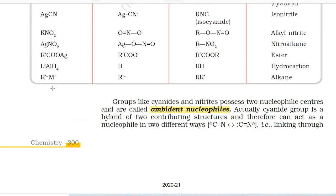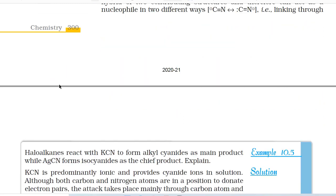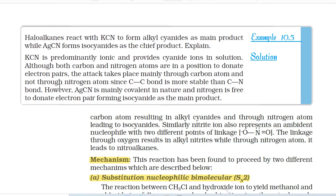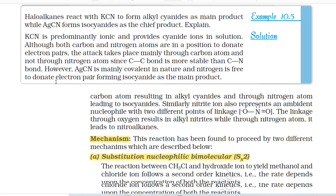Groups like cyanides and nitrites possess two nucleophilic centers and are called ambident nucleophiles. The cyanide group can act as a nucleophile in two ways: linking through carbon resulting in alkyl cyanides, and through nitrogen atom leading to isocyanides. Similarly, nitrite ion also represents an ambident nucleophile. Linkage through oxygen results in alkyl nitrites, while through nitrogen atom it leads to nitroalkanes.